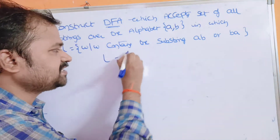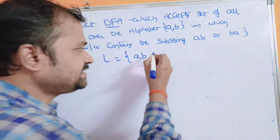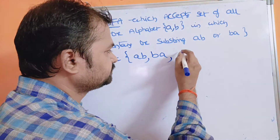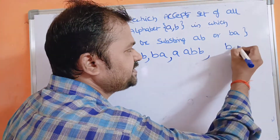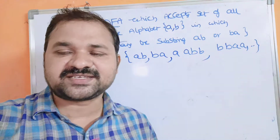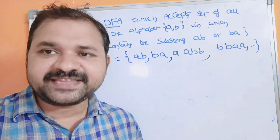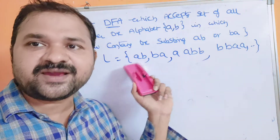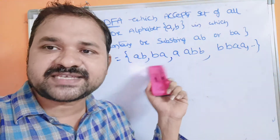Let us take some examples. The first string is AB — before AB we don't have any characters, after AB we don't have any characters. The second string is BA — before and after BA we don't have any characters. Next, AB with a single A before it and a single B after it. Next, BA with a single character before and after. So likewise we can construct any number of examples. The minimum possible substring is AB or BA, and its size is 2.